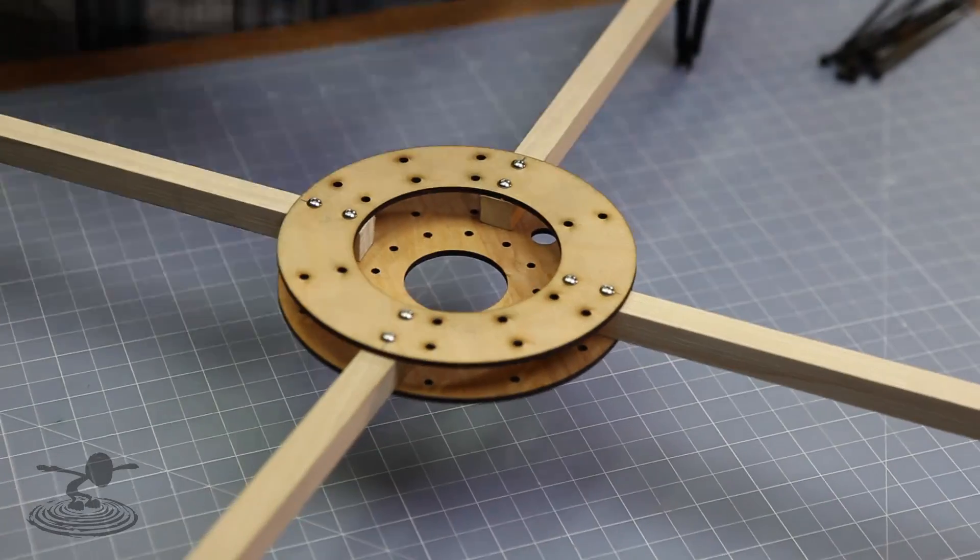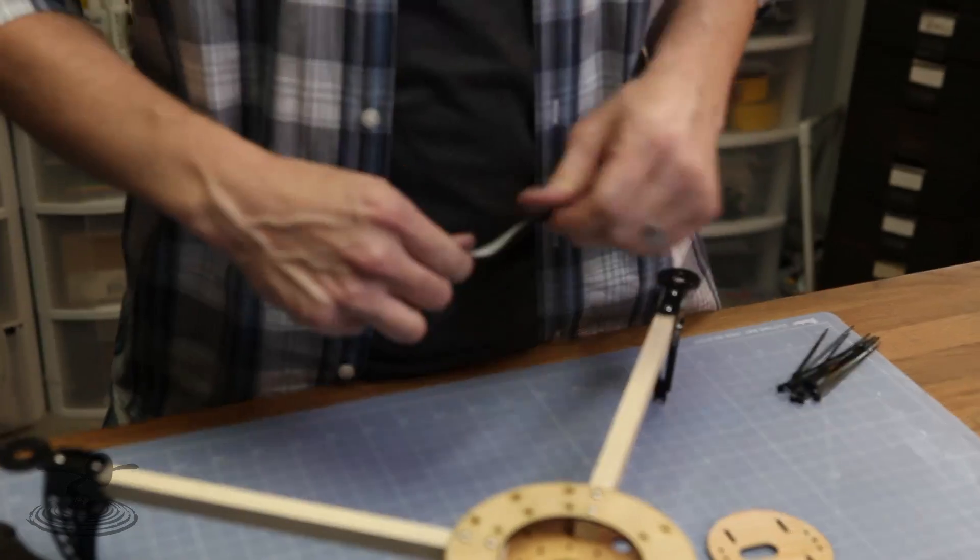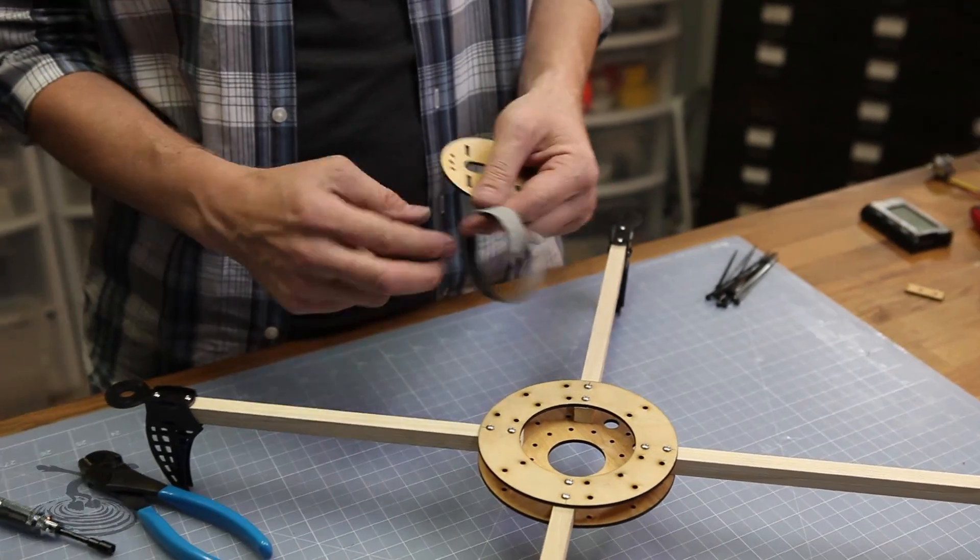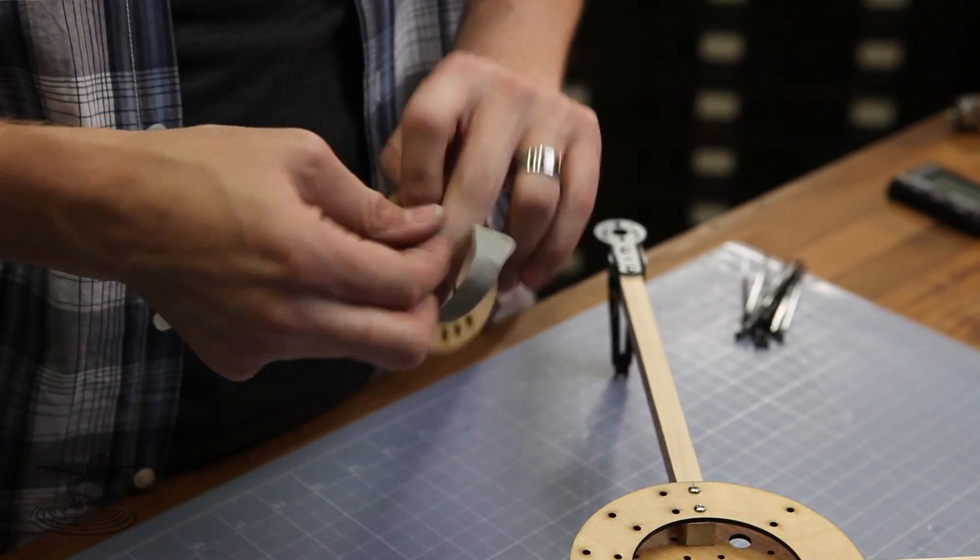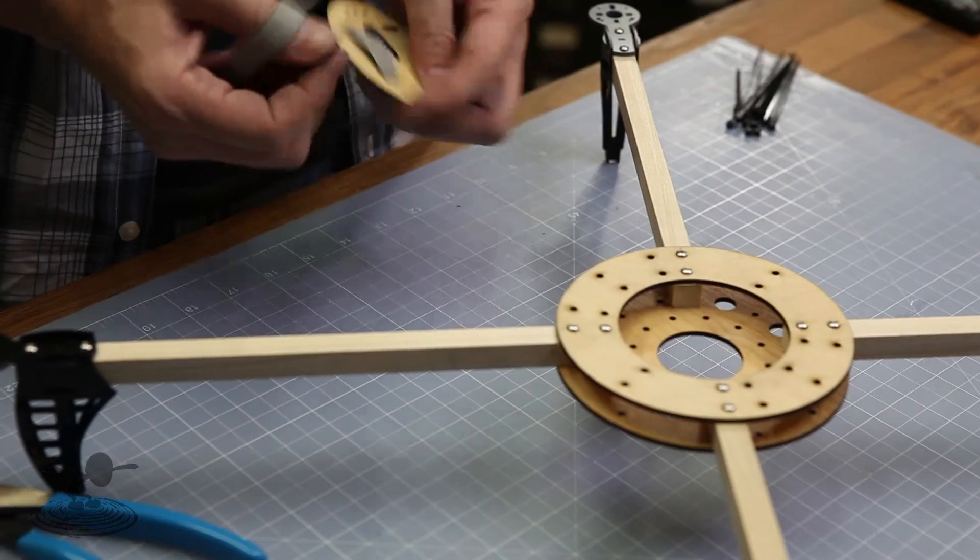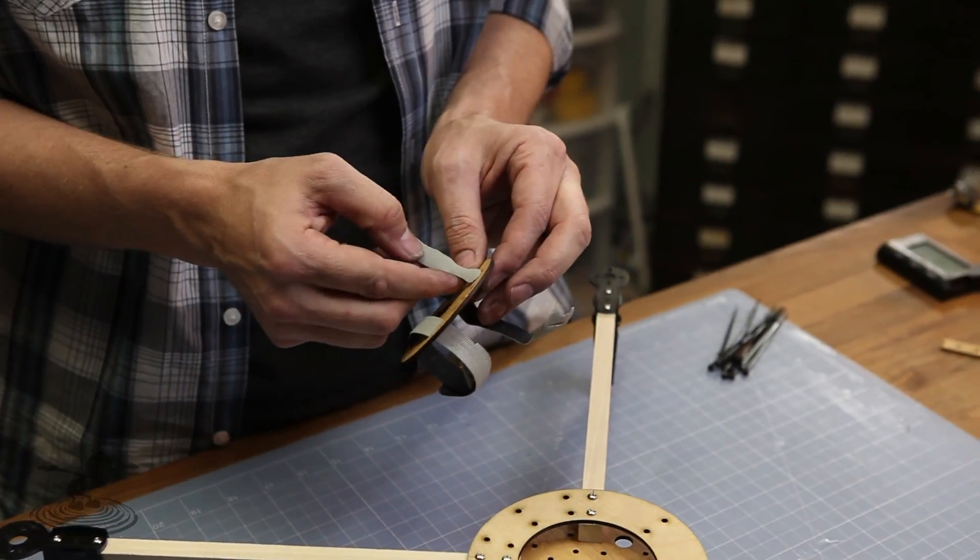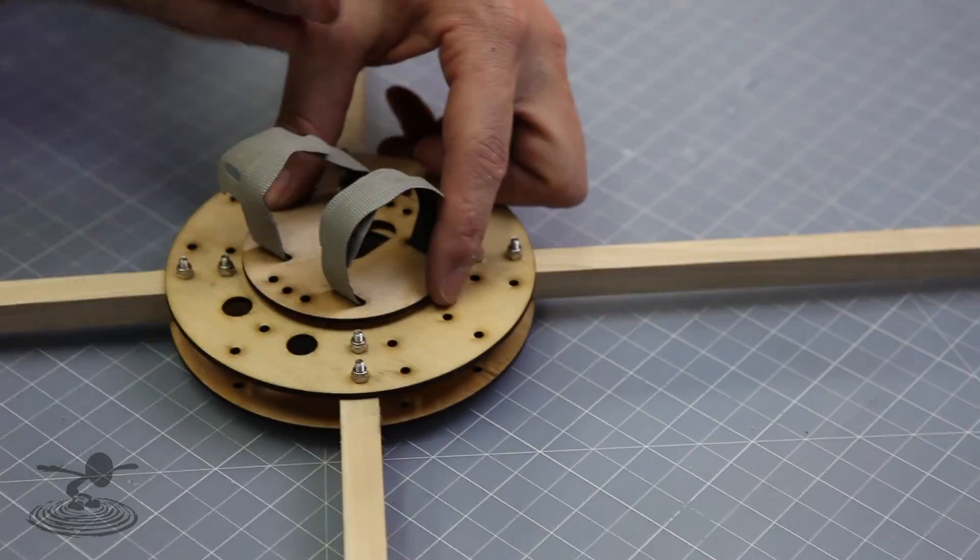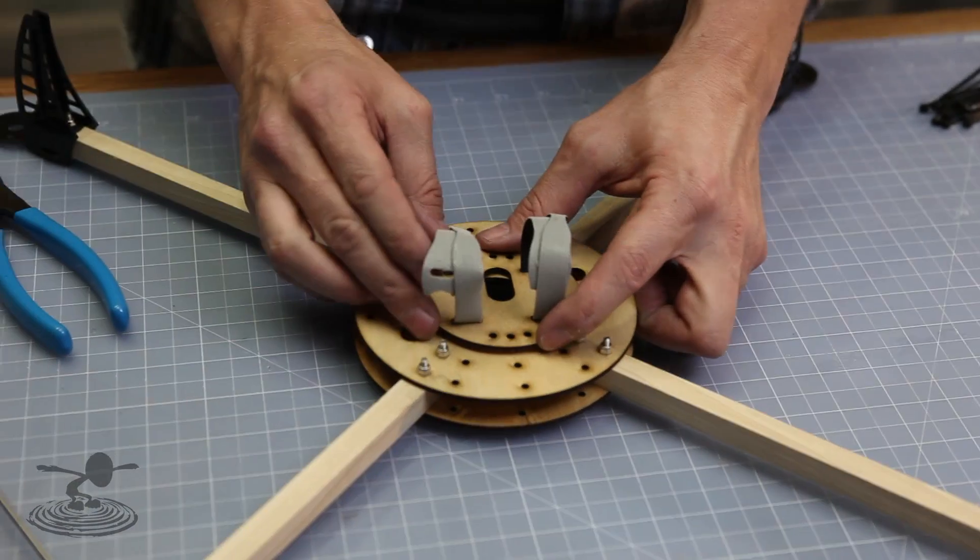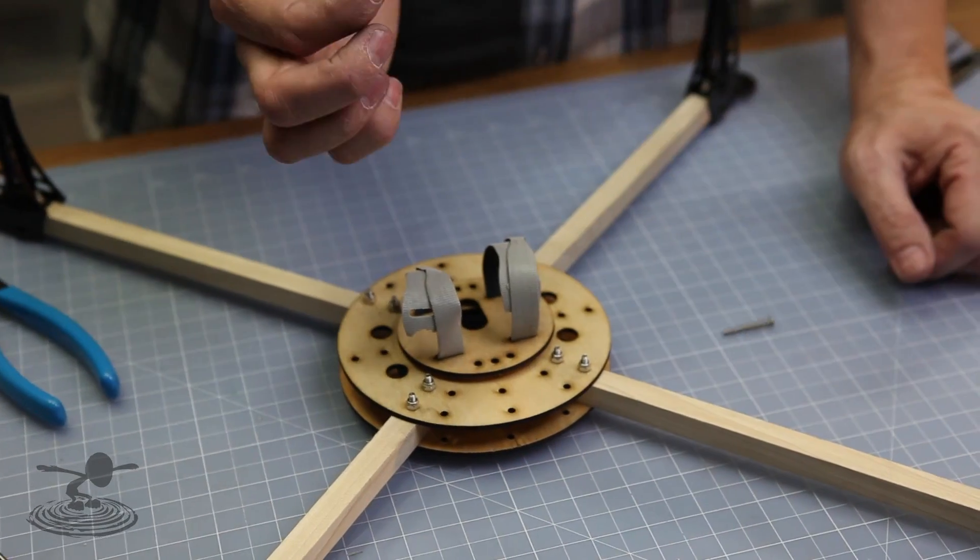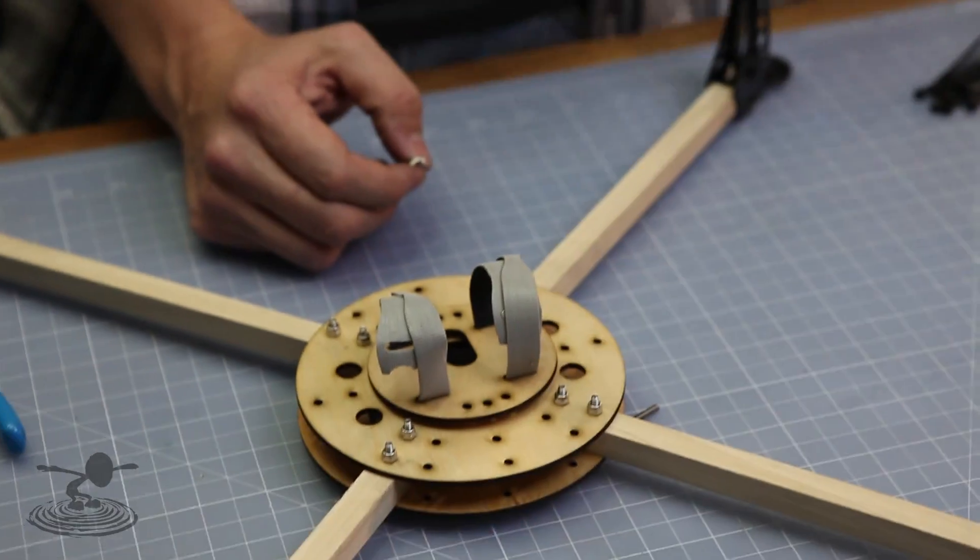We've got our quad frame all done. The next thing you want to do is get your battery plate installed. So if you bought the quad or the tri kit, it comes with the Velcro straps. And what you do is you just feed one end up through and feed it down. Make sure they're even or however you like them placed. It's important to do this now because you can't do it after you mount the battery plate.